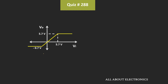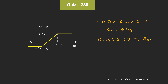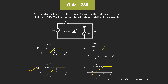Looking at the overall input-output transfer characteristic: whenever the input is between minus 0.7V to 5.7V, Vout will be equal to Vin. Whenever the input voltage goes above 5.7V, Vout will get clipped to 5.7V. And when the input voltage goes below minus 0.7V, Vout is equal to minus 0.7V. This is the transfer characteristic of the given circuit, and from this we can say that C is the correct answer.